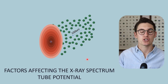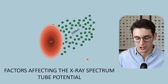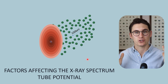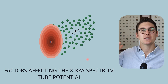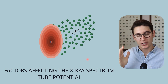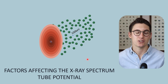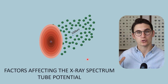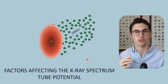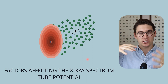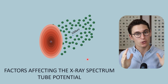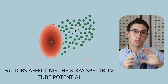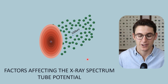The second thing we can change is our tube potential. Our tube potential is what accelerates electrons from our cathode to our anode. So increasing our tube potential will increase the energy of those electrons heading towards our anode. Not only does it increase the energy of those electrons, but it also increases the number of electrons on the surface of that filament — as we increase our tube potential, we pull more of those electrons away and send more towards our anode.